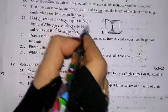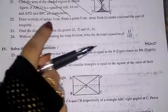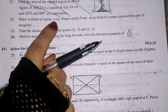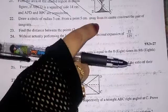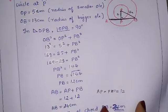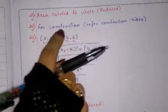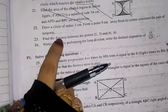Question number 21 is reduced — it is from the area related to circles chapter. Question number 22: draw a circle of radius 3 cm from a point 5 cm away from its center. For construction you can refer to my construction videos which I have already uploaded.